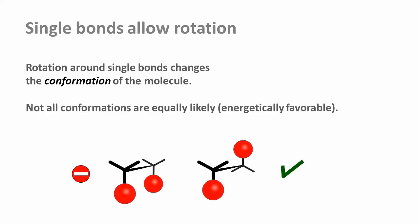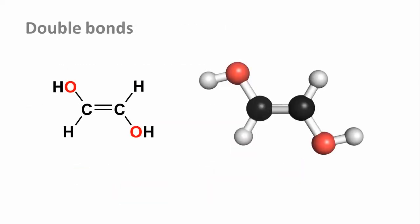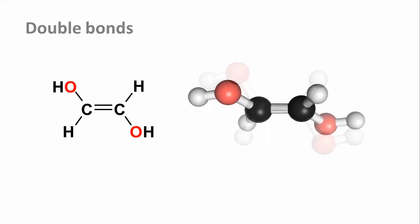So much for single bonds. What about double bonds? The first thing we notice is that the geometry of the carbon atoms is different. If they form double bonds, the three atoms attached to the carbon atom are all in one plane. And that's why we call that geometry trigonal planar.